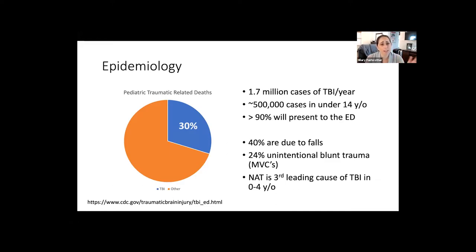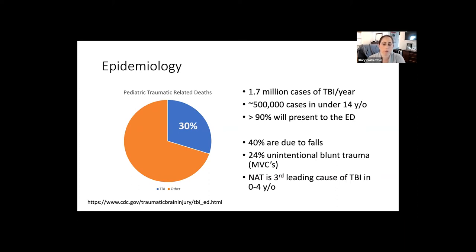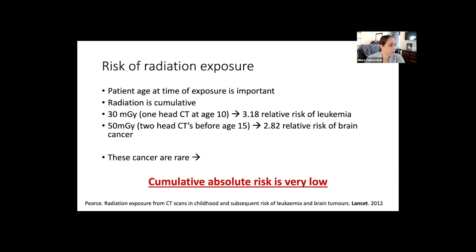Epidemiology: there are about 500,000 cases of head trauma in kids under 14 every year in the U.S., and over 90% present to the ED. About 40% of head injuries are due to falls, about a quarter to motor vehicle accidents. Importantly, non-accidental trauma — child abuse — is the third leading cause of TBI in children ages zero to four. Keep those spidey senses up. About 30–40% of pediatric trauma-related deaths are related to severe pediatric TBI.